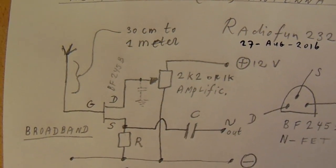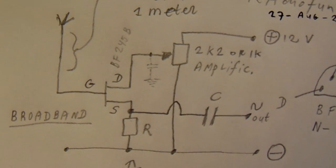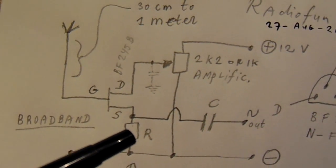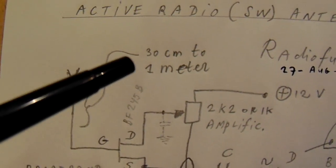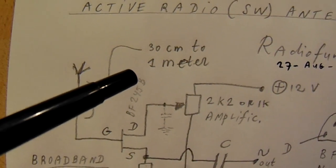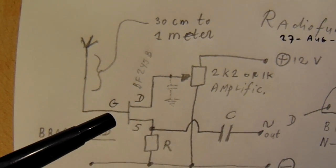First, it's very important to tell that here we have a field effect transistor and an antenna that's quite small, 30 centimeters up to one meter, directly connected to the gate.